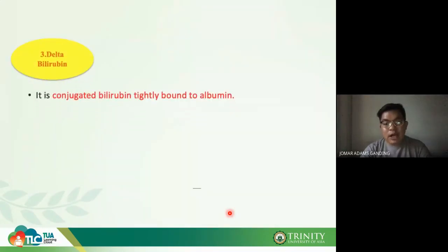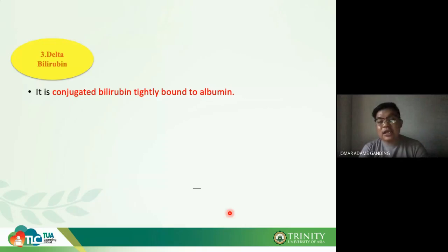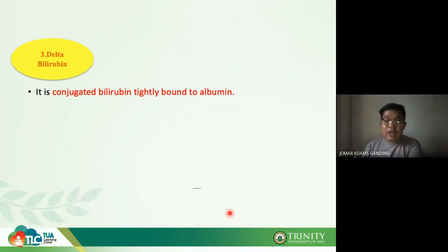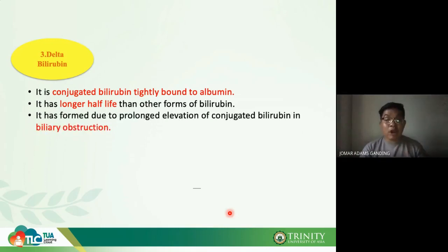Your delta bilirubin is a type of conjugated bilirubin, but it is tightly bound to albumin — unlike normal conjugated bilirubin, which is water-soluble and doesn't need a carrier. Because it is tightly attached to albumin, delta bilirubin has a longer half-life than all other bilirubin types. Delta bilirubin occurs because of biliary obstruction — for example, gallstones (cholelithiasis) blocking the bile duct.